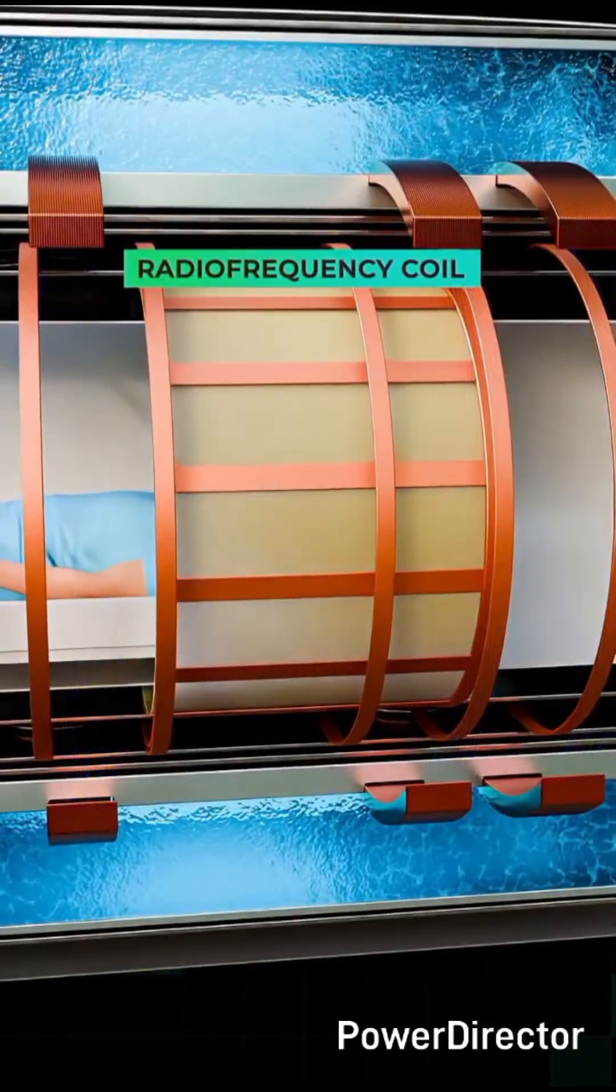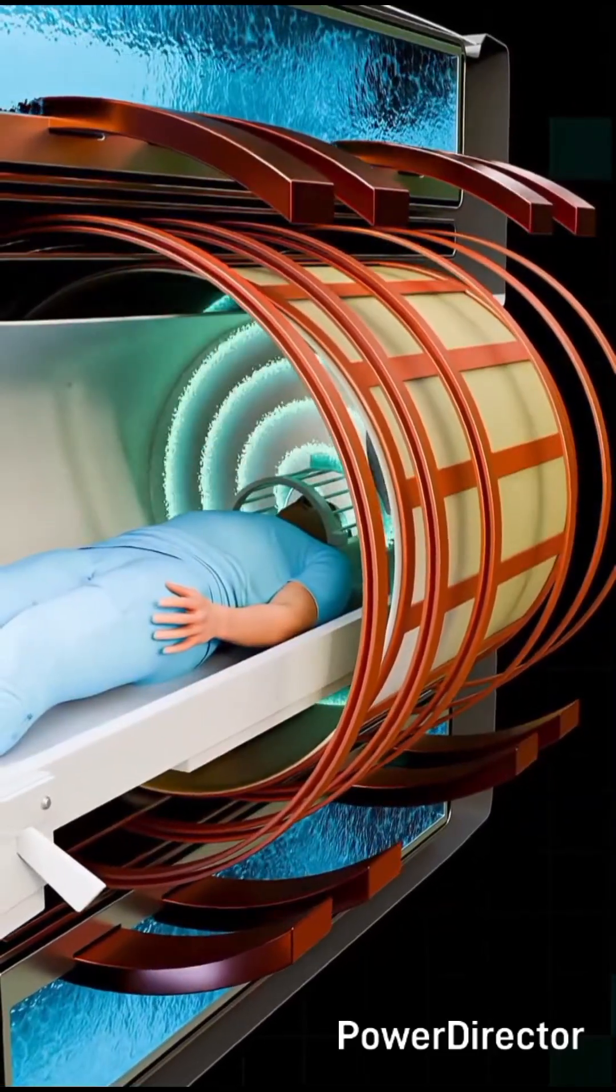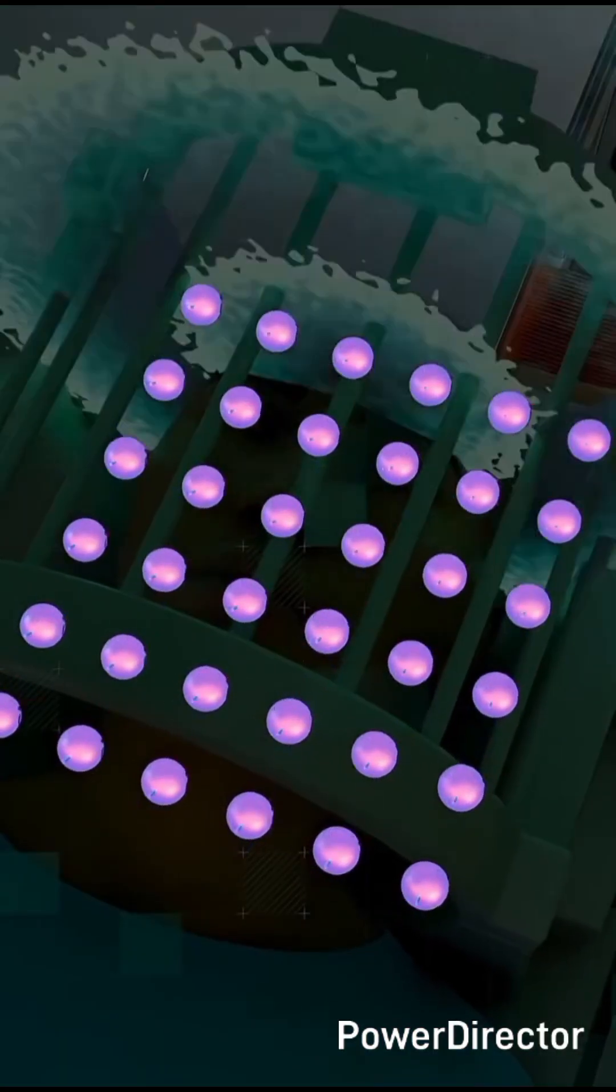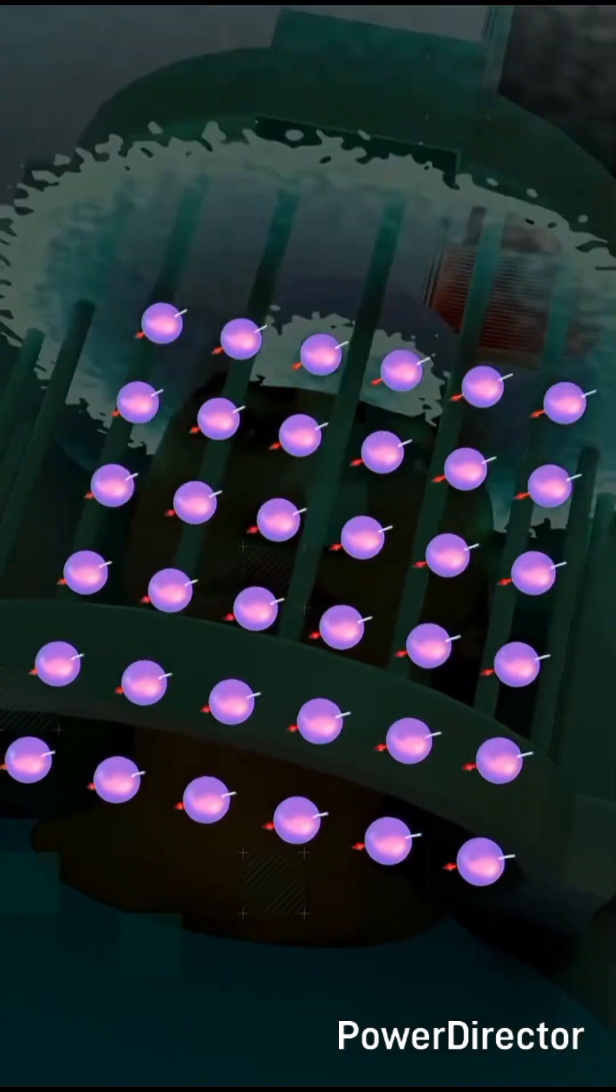Next, another set of coils, the RF coils, deliver a burst of radio waves. This energy knocks the tiny magnets sideways so that they begin wobbling together in sync along the transverse plane.